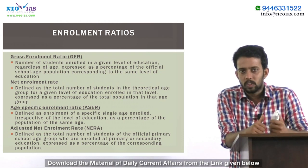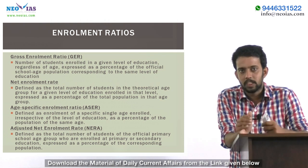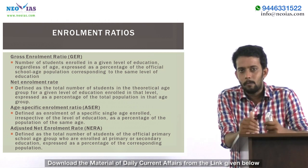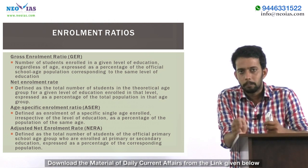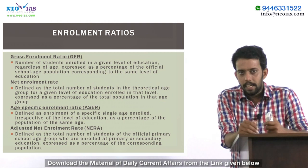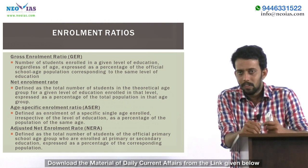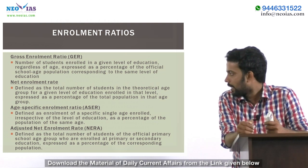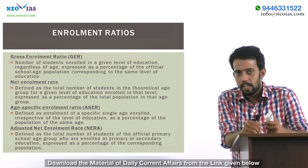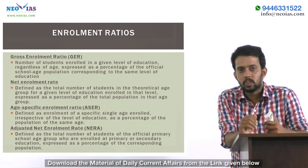Coming to enrollment ratio, we actually use different types of enrollment ratios globally. We have the UNDP Sustainable Development Goals which target Goal Number Four on increasing education. In this goal, there are various targets to enroll more students into schools, and this enrollment is tracked under various ratios like GER, NER, ASER, and NERA. The most important one is GER, that's Gross Enrollment Ratio.